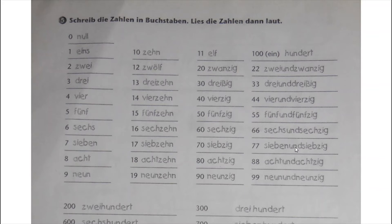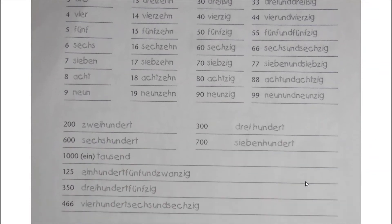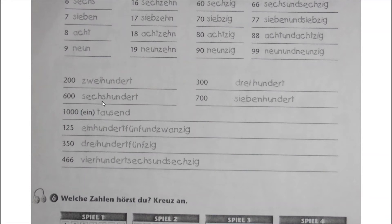Continuing with larger numbers: 200, 300, 600, 700, then 1000 - or 'eintausend'. The three-digit numbers in words: dreihundert, vierhundert sechs, and so on. Then we move to number six.